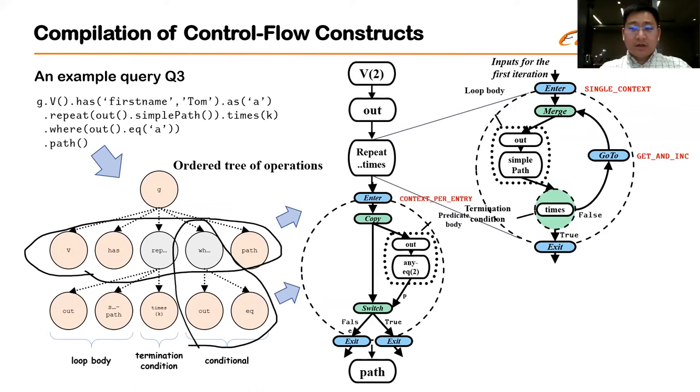Now having this mechanism, the compilation of complex Gremlin queries becomes relatively straightforward. Due to time limits, I won't delve into every detail, but just give you an intuition that we can follow the same structure, the hierarchical structure of a Gremlin query to represent each nested traversal in the query to a scope, and then specify the right policy so that the execution semantics match Gremlin specification.